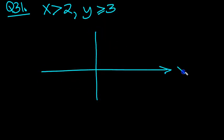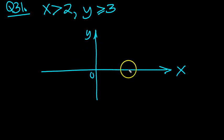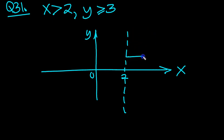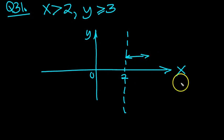Bearing those thoughts in mind, let's do a little sketch. There's the x axis, there's the y. X is bigger than 2, so the value of 2 on the x axis is here. The x values don't touch the value 2, so the first thing to do is to draw a dashed line to denote that they don't touch. We're talking about this region over here, up to here and onwards — all that region there is that inequality.